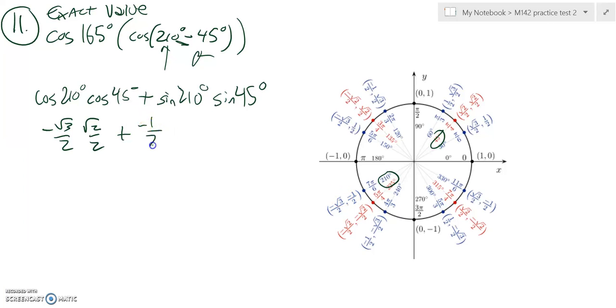sine of 210 is negative 1 half, and sine of 45 is root 2 over 2.